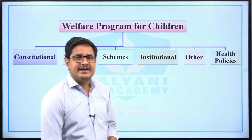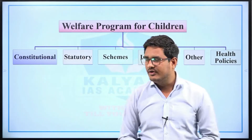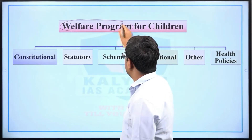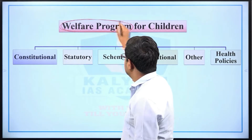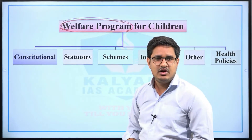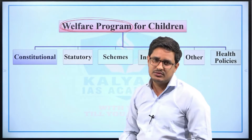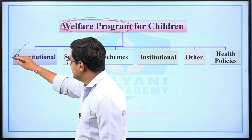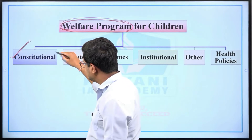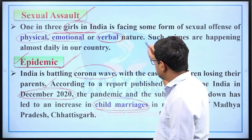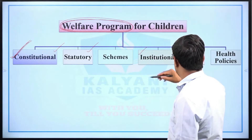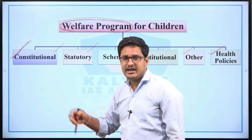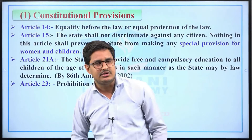Now we will study welfare programs for children. The welfare provisions for children can be divided into constitutional provisions, statutory provisions, schemes, institutional provisions, other provisions, and health policies. We will understand each of these provisions one by one.